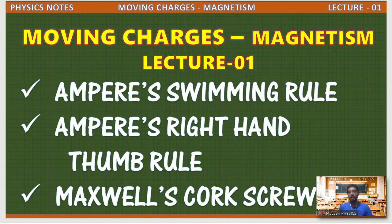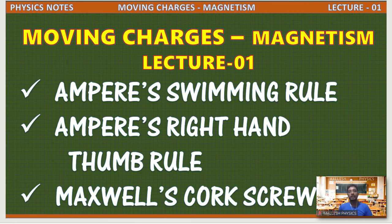This chapter is about the study of magnetic field which is produced by a current carrying wire. In electrostatics we learned about charges which are at rest — those charges produce an electric field. Now if charges flow through a conductor, these charges will also produce a magnetic field. In this chapter we are going to study that magnetic field produced by current carrying wire.